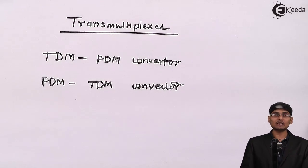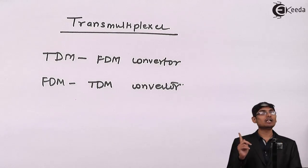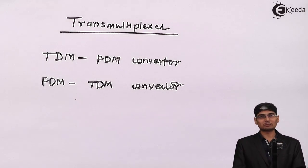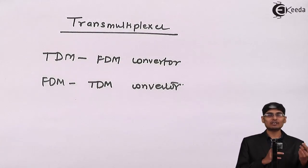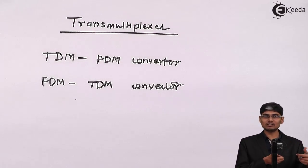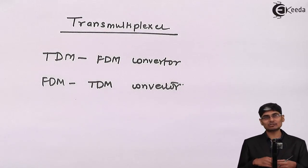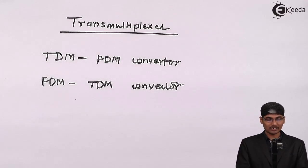Now how these things can happen? FDM is an analog multiplexing, TDM is a digital multiplexing. So we are converting a digital multiplexing to analog multiplexing and analog multiplexing to digital multiplexing.